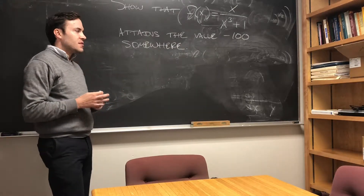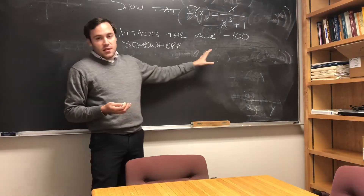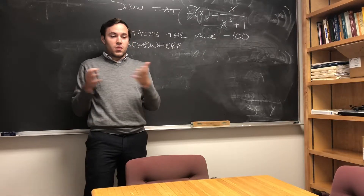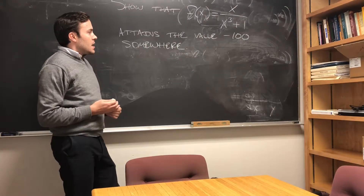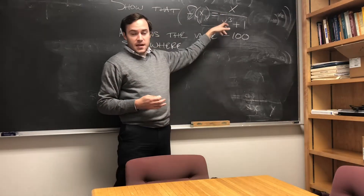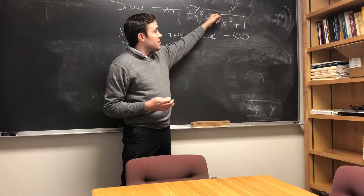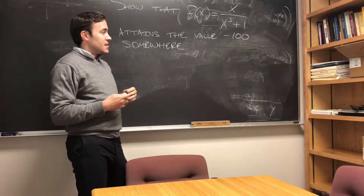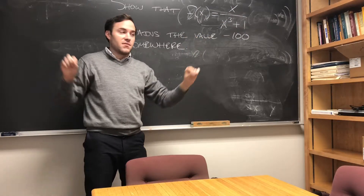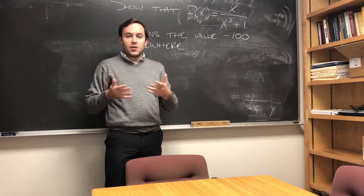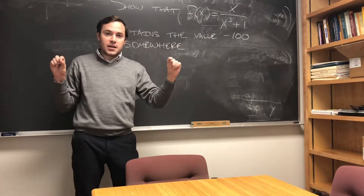Negative 100 is sort of a large value — not huge, but it's not like 1 or 2. You might think that maybe this should be happening somewhere toward one of the infinities, toward x going to negative infinity or x going to positive infinity. If you check the limit as x goes to plus or minus infinity, since the degree of the denominator is larger than the degree of the numerator, the denominator grows much faster, and this function actually asymptotes down to zero at plus and minus infinity.